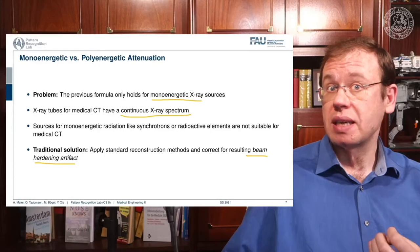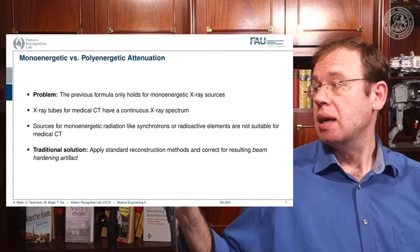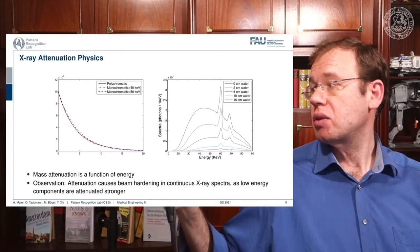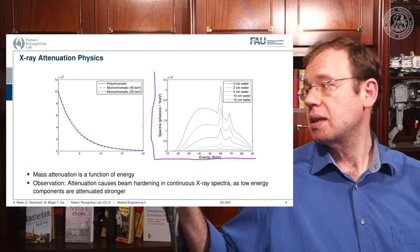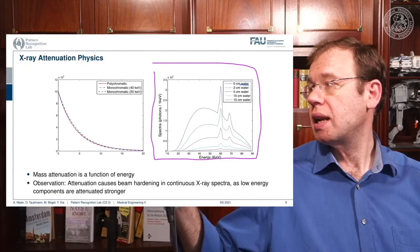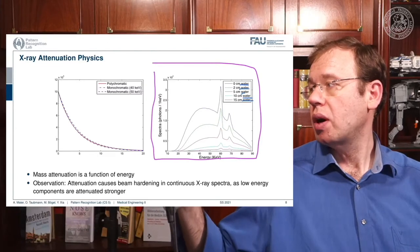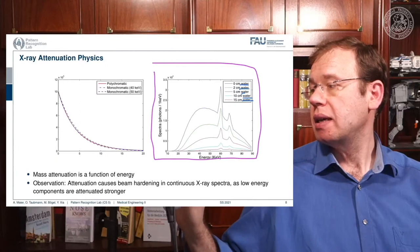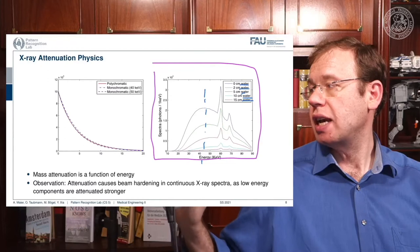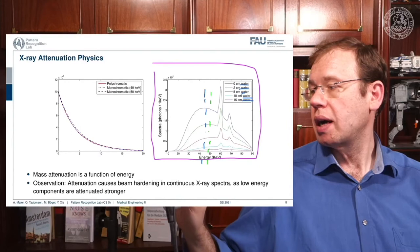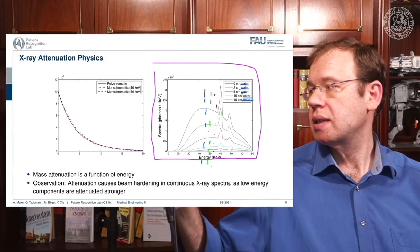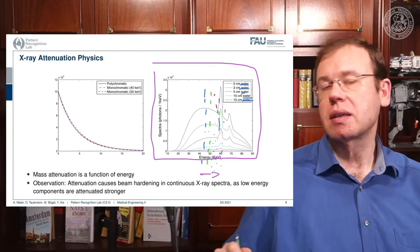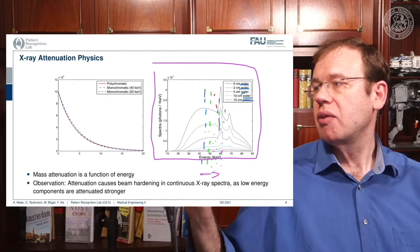It would be much better if we design our measurement process so we can intrinsically solve this problem. With different acceleration voltages we get different effects. On the right-hand side you can see the effect on the spectrum with different lengths of water on the path — the more water on the path, the more the shape of the spectrum changes. In particular, its average energy goes up. The more centimeters of water we add, the more the average energy in the spectrum increases — this is the reason for the beam hardening effect.